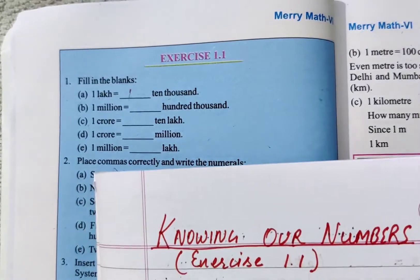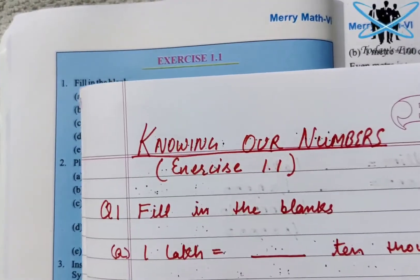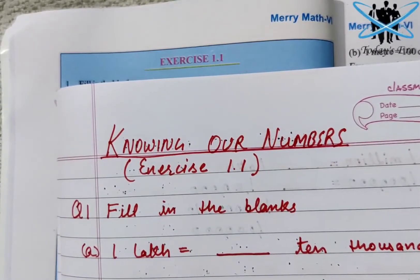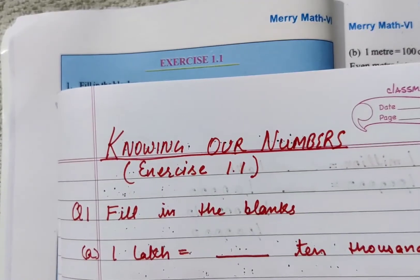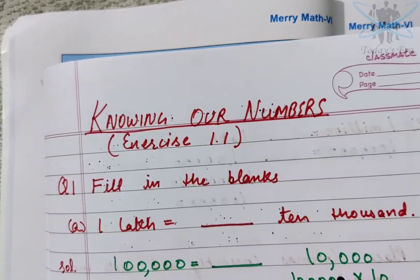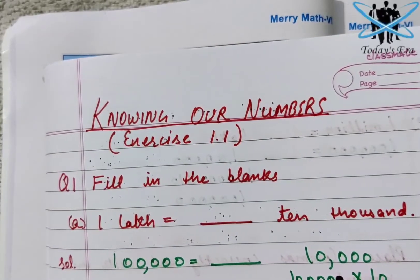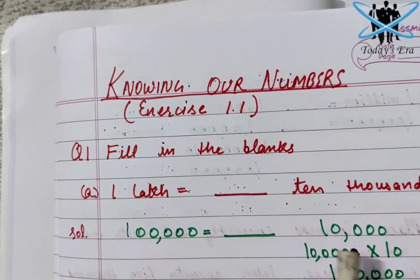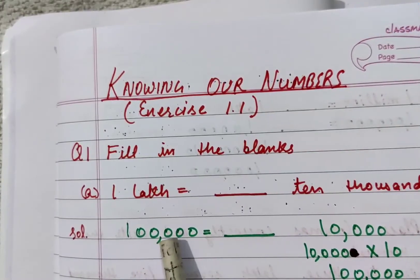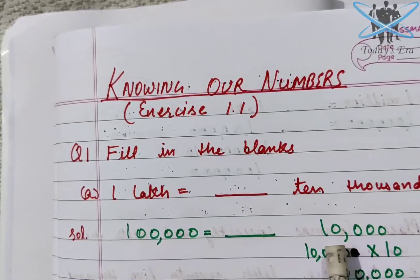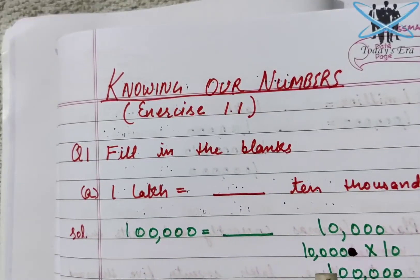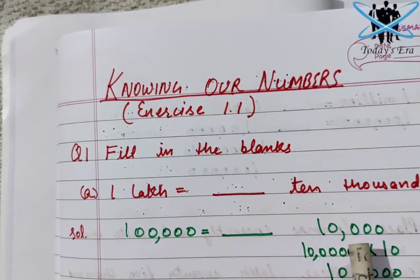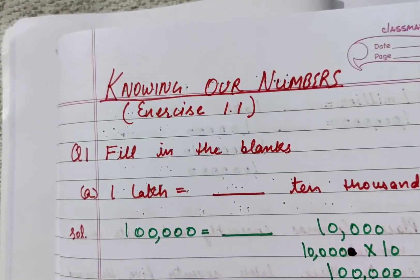At the top is written the chapter name, and below is Exercise 1.1 'Fill in the Blanks.' The first one given is: one lakh equals to dash ten thousand. As you all know, one lakh has five zeros. Similarly, ten thousand has four zeros. Now what you need to do is make the number of zeros equal on both sides.